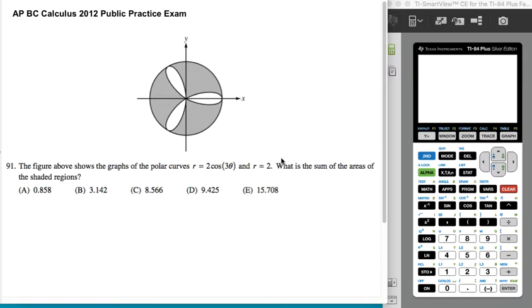All right, so now we have a calculator question that actually requires a calculator, and it's also a little bit tricky. So we have a polar curve. We have just the circle, which is just r equals 2, and we have this rose curve. And we want to find the sum of the gray areas in here.